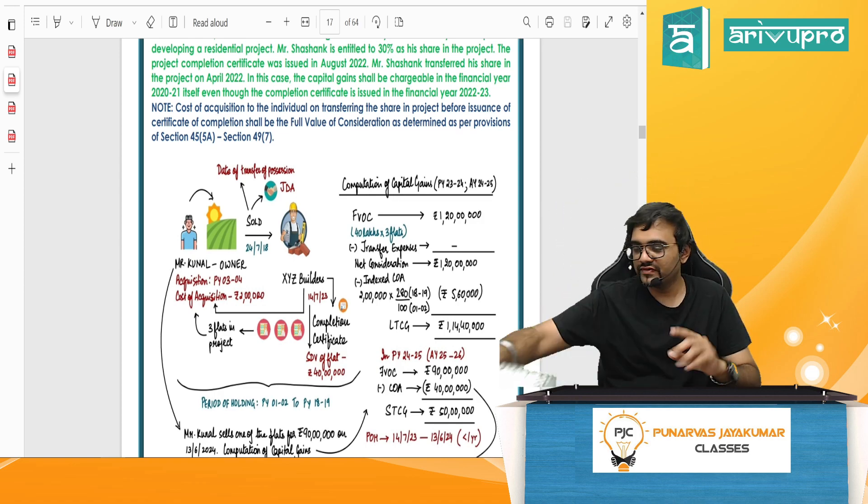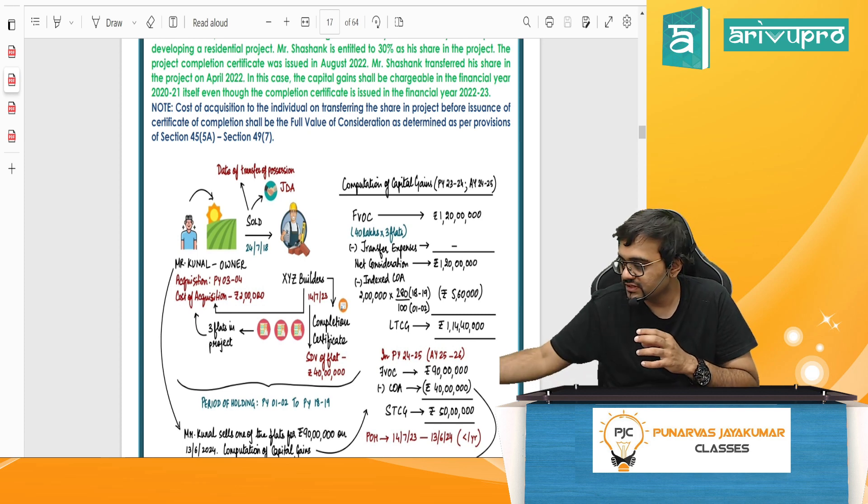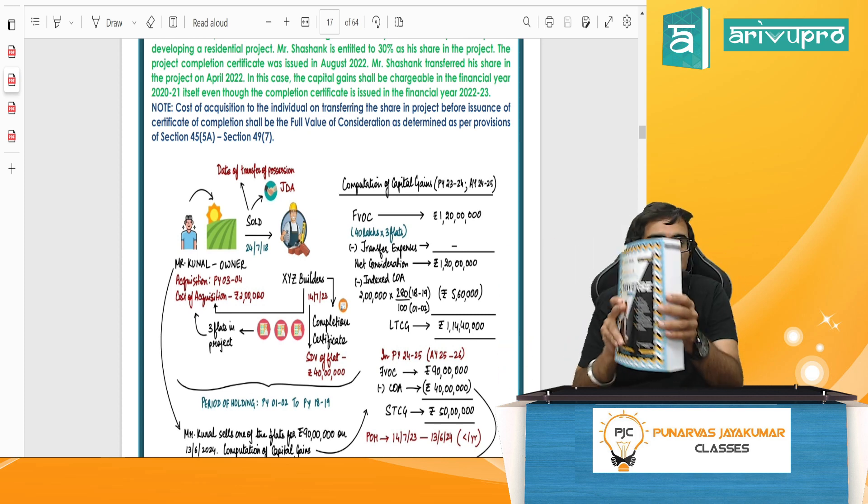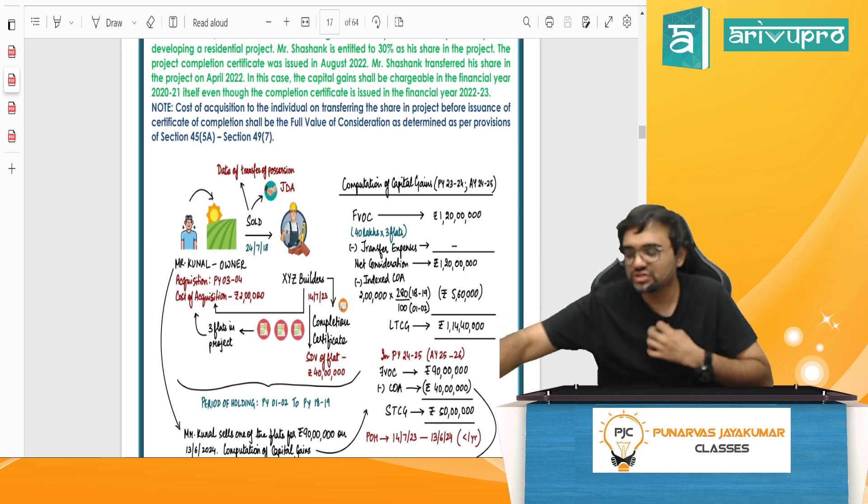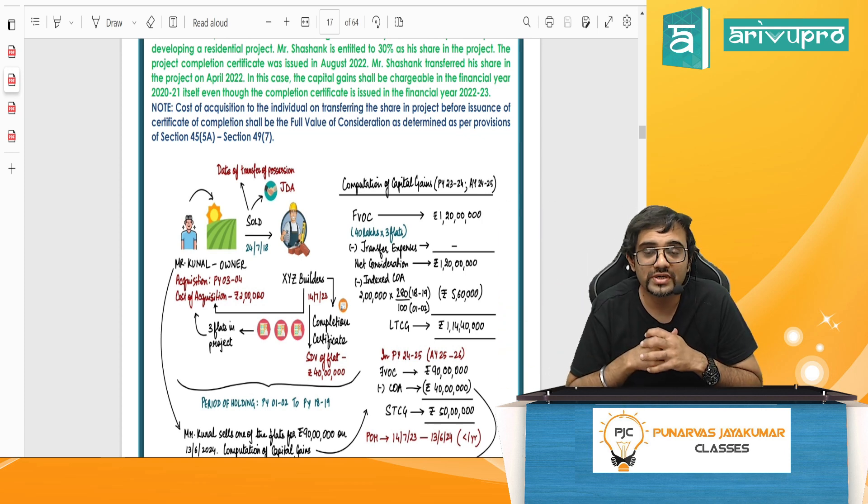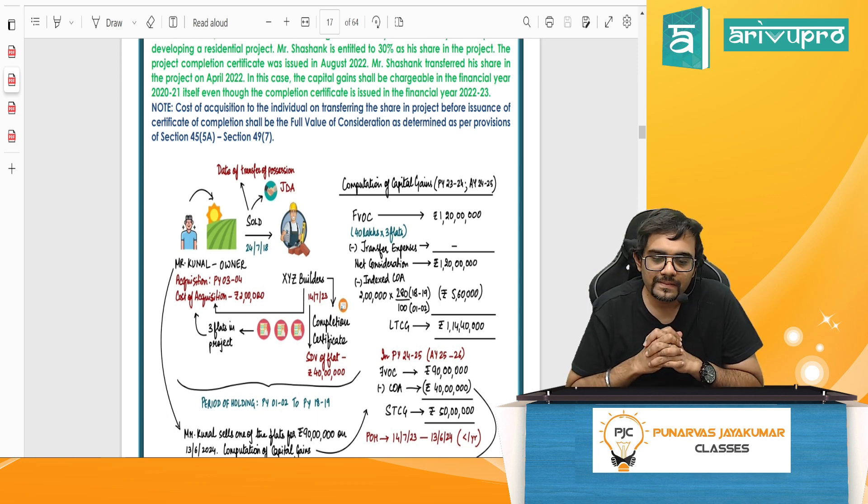And then you have a second module, which is for international taxation, which is black and white. And the third module is the tax verse. This is the question answer booklet and MCQ booklet. So with these three books, if you should you opt to purchase that separately, you could do that. Otherwise, the encrypted PDF, etc. The technical part, you can speak to the to our team at Arivu Pro. Having said that, these three books would suffice and the classes would suffice, my dear friends.